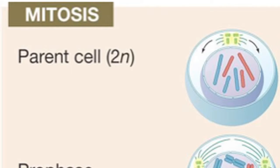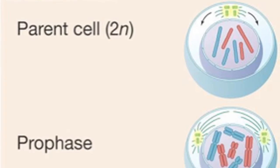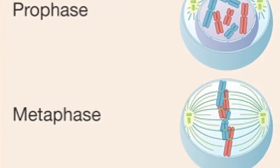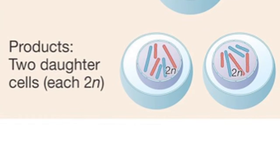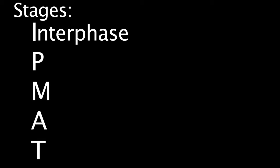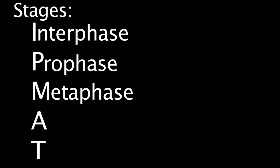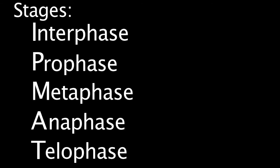Mitosis starts with a parent cell, which progresses through several stages and produces two daughter cells. The stages the cell goes through are IPMAT: interphase, prophase, metaphase, anaphase, and telophase.